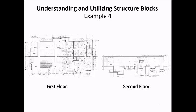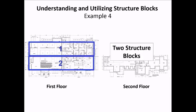This example consists of a retirement home where only half the structure extends to the second story. For this one, it would be appropriate to utilize two structure blocks: one specified as two stories and another specified as one story.